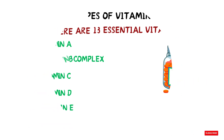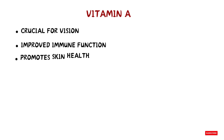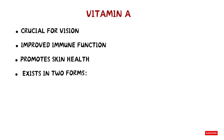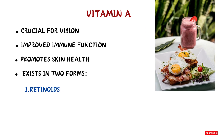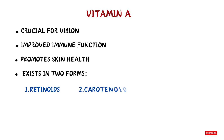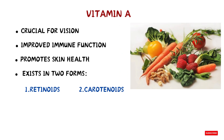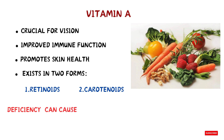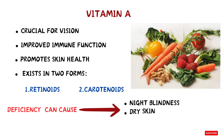Vitamin A is crucial for vision, immune function, and skin health. It exists in two forms: retinoids, found in animal sources like liver, eggs, and dairy products, and carotenoids, found in colorful fruits and vegetables like carrots and spinach. A deficiency in vitamin A can cause night blindness, dry skin, and increased susceptibility to infections.